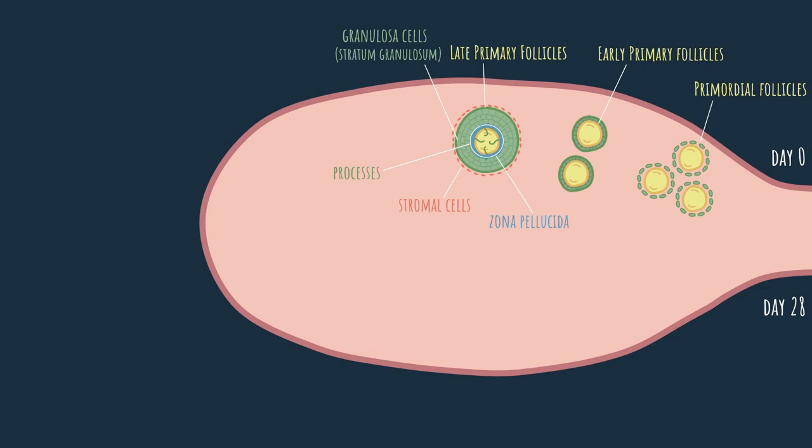Lastly, we see a change in the cells surrounding the follicle. These cells are actually part of the connective tissue of the ovary, and they're called stromal cells. The stromal cells begin to organize themselves around the follicle and form a layer called the theca folliculi, which you can see here in red. Theca means case, and well, that kind of makes sense because you can see it encases the follicle. When we see these features, the follicle is considered to be a late primary follicle.